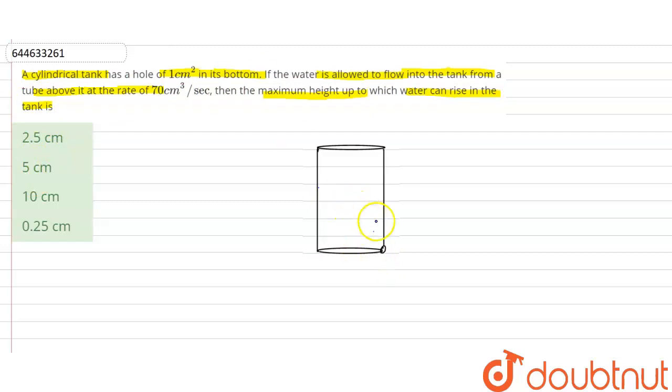In this question, we have one tank and it has a hole at the bottom with area equals to 1 cm². Now, water is allowed to flow into the tank from above with the volume flow rate equals to 70 cm³ per second.